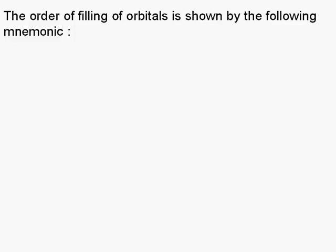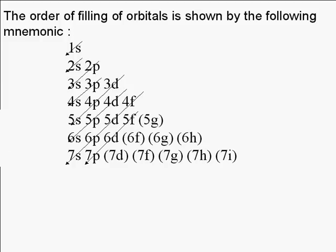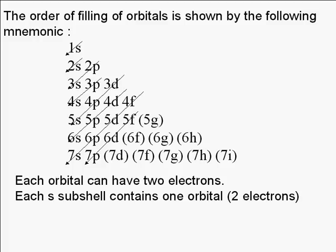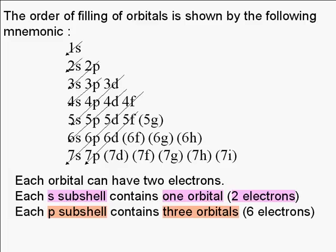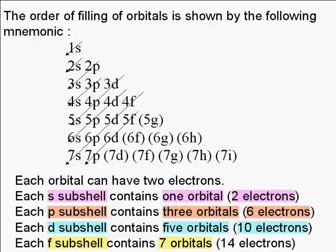The order of filling orbitals is shown by the following mnemonic: the 1s orbital is filled first, followed by 2s, 2p, 3s, 3p, 4s, 3d, 4p, 5s, 4d, 5p, 6s, 4f, 5d, 6p, 7s, 5f, 6d, 7p. Each orbital can hold two electrons. Each s subshell contains one orbital giving two electrons. Each p subshell contains three orbitals or six electrons. Each d subshell contains five orbitals or ten electrons. Each f subshell contains seven orbitals or 14 electrons.